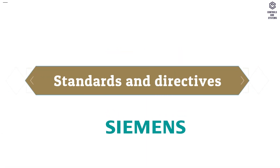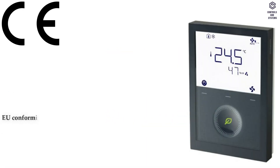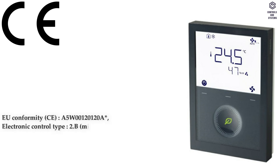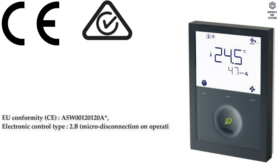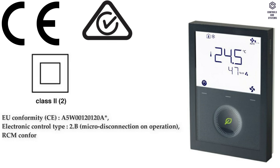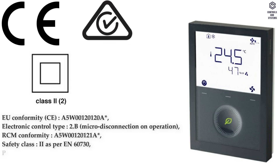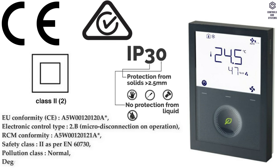Standards and Directives: EU Conformity CE, Electronic Control Type 2B, RCM Conformity. Safety Class is 2 as per EN60730, Pollution Class is Normal, Degree of Protection of housing is IP30 as per EN60529.